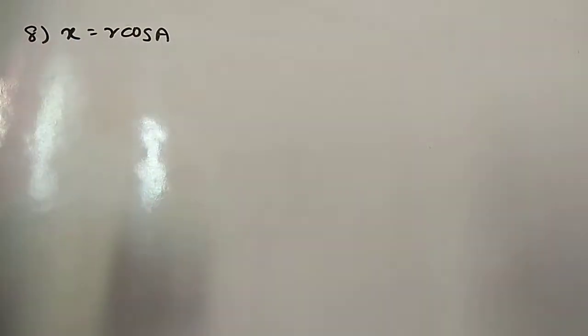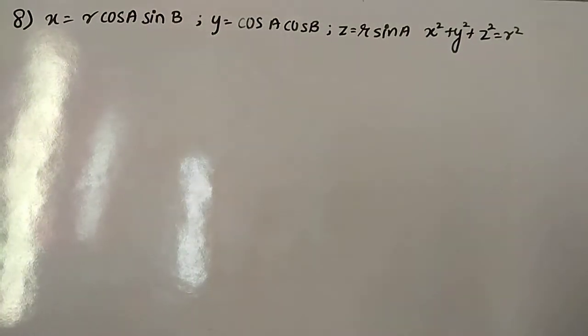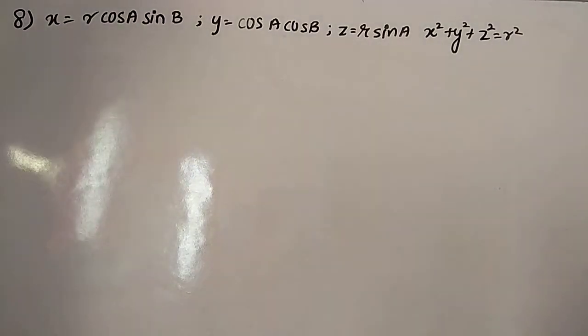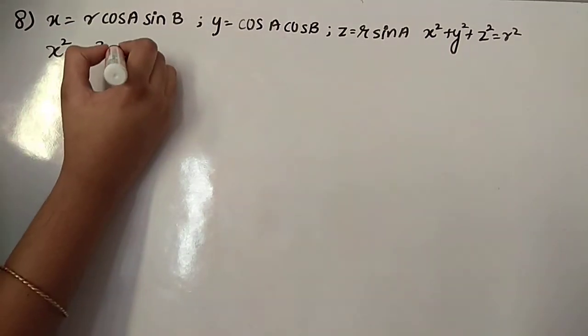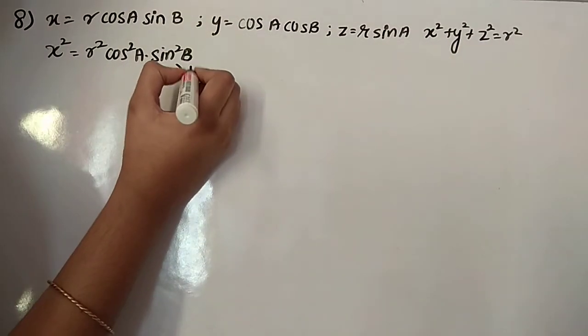Now the 8th question. If x = r·cos(a)·sin(b), y = r·cos(a)·cos(b), and z is also given. We have to find x² + y² + z² = r². Let's solve. First, squaring x: x² = r²·cos²(a)·sin²(b). Consider this as equation 1.